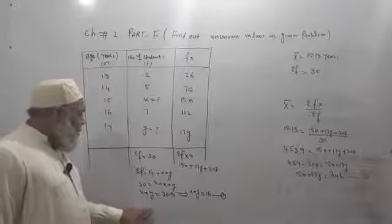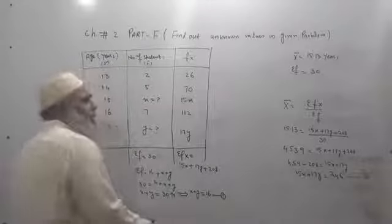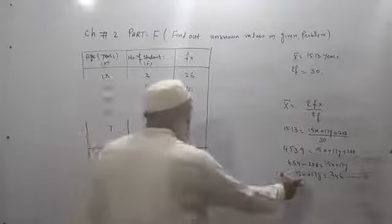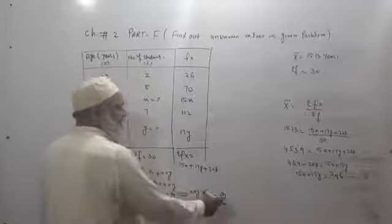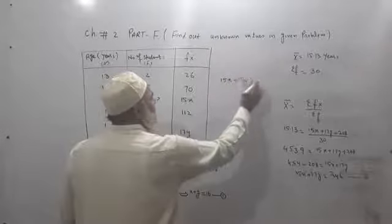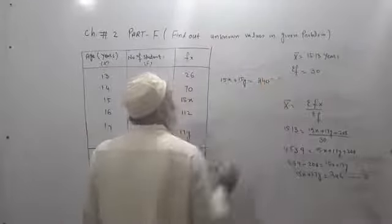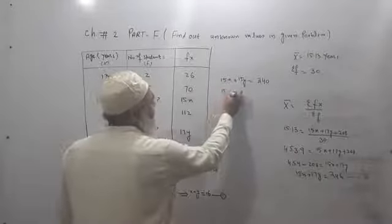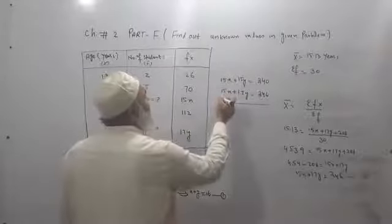Now we have to find out the unknown values x and y from these equations. So firstly, we have to create coefficient of x the same in equation number 1 by multiplying by 15, because here is 15x. Now here also should be 15x in equal form. So now we multiply equation 1 by 15: 15x plus 15y equals 16 times 15 equals 240. Now place this here and subtract both. 15x plus 17y equals 246.